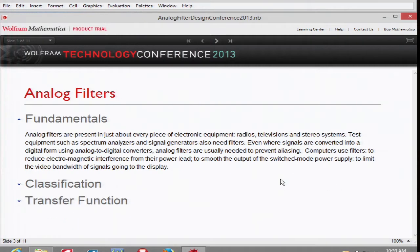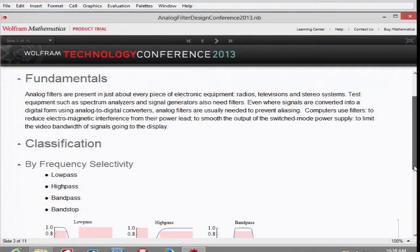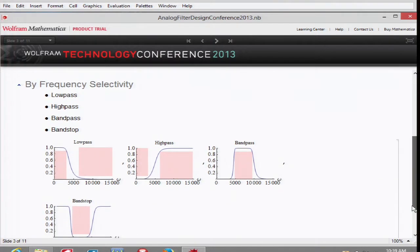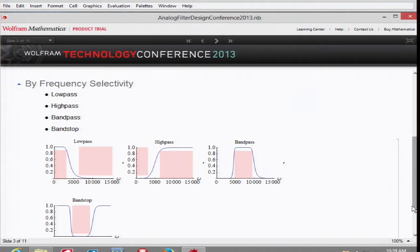The filters could be classified either by frequency selectivity or by approximation method. When it comes to frequency selectivity, we have four basic types: low pass, high pass, band pass, and band stop. As their name suggests, they pass certain type of signals of certain frequencies and reject the others. So low pass will pass low frequencies and reject the rest, and so on.